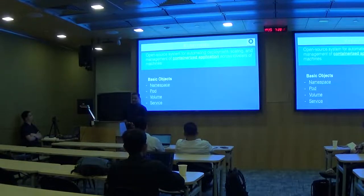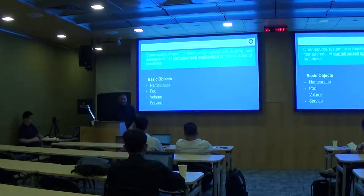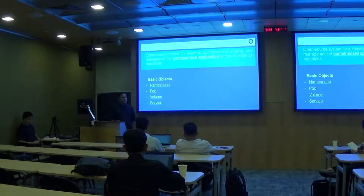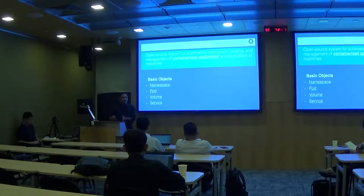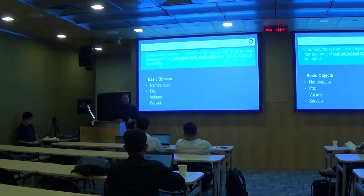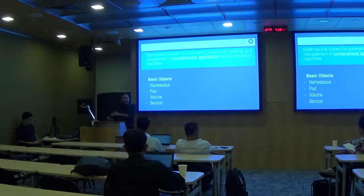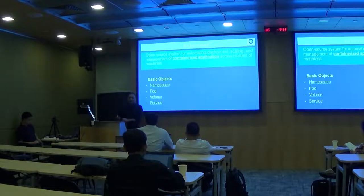Kubernetes has a set of basic objects: namespaces, pods, volumes, and services. Namespaces are logical groupings — like in Java or .NET — you can create namespaces within a physical cluster for development, QA, or UAT. This allows virtual segregation of objects. On the same physical cluster you can have multiple namespaces and deploy the same or different versions of your application into each.